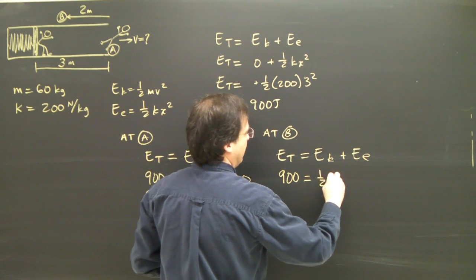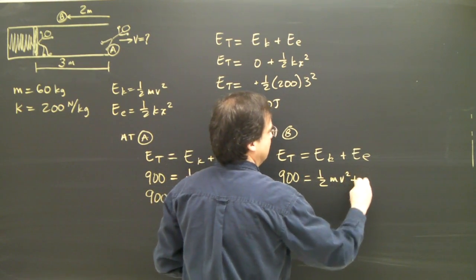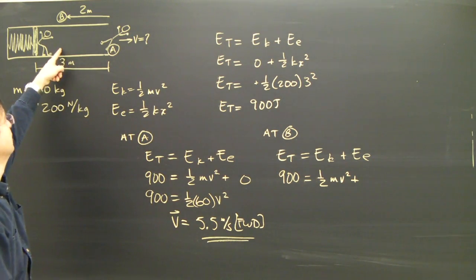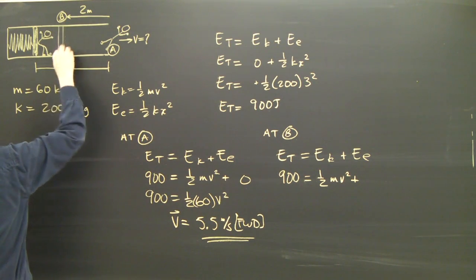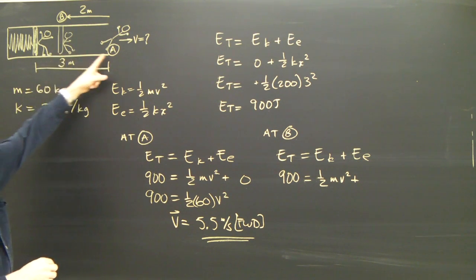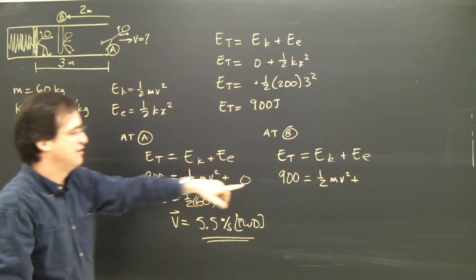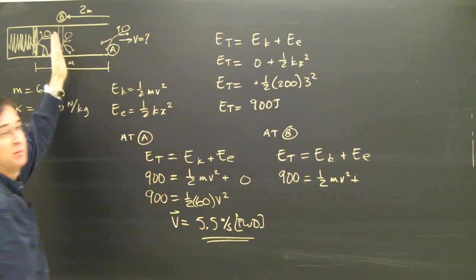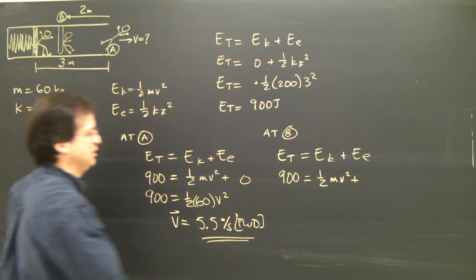The kinetic is one half mv squared. And in this case, I still have some elastic energy at this point. When this person is at B, they're starting to move. They're already moving a bit. And I still have some elastic energy. And this half kx squared, the x is how much the spring has been compressed. And in this case, it's 2 meters.